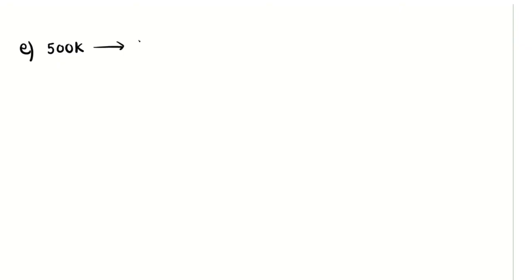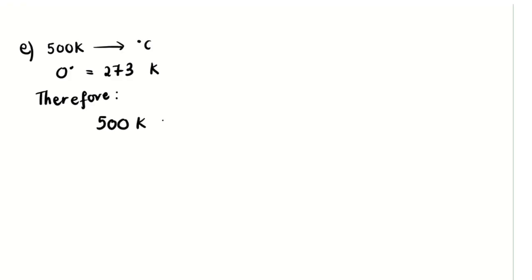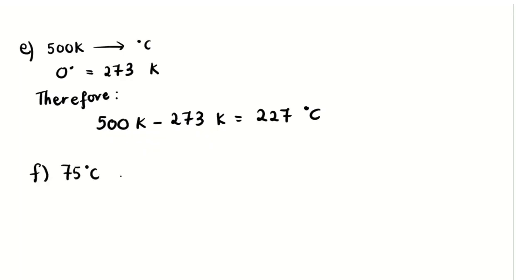For part E, convert 500 Kelvin to degrees Celsius. Remember that 0°C equals 273 Kelvin (sometimes written as 273.5 in some references, but we use 273 here). To convert Kelvin to Celsius, subtract 273: 500 K − 273 K = 227 degrees Celsius.